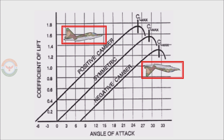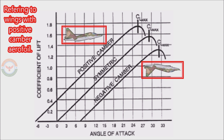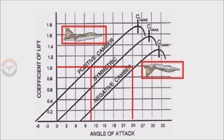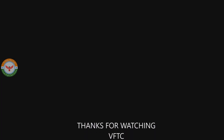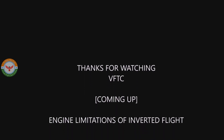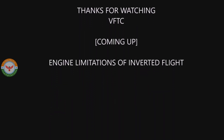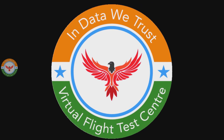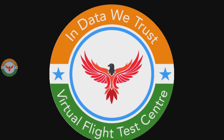To conclude, we can say that the wing does not know whether it is flying upright or inverted. Inverted flight leads to negative camber, which in turn requires a higher angle of attack to be maintained for the same coefficient of lift in comparison to upright flight. Other than the aerodynamic considerations of inverted flight, it will be pretty interesting to know what the engine limitations are when we fly inverted — that I will cover in my next video. Thanks for watching.